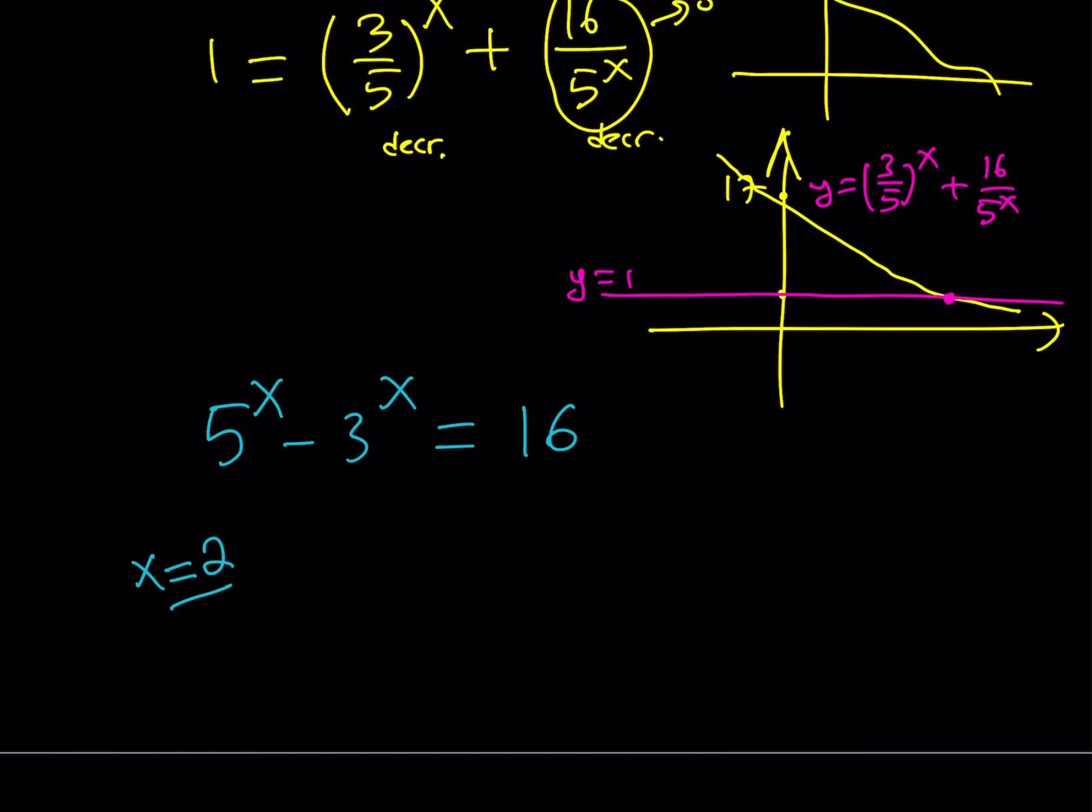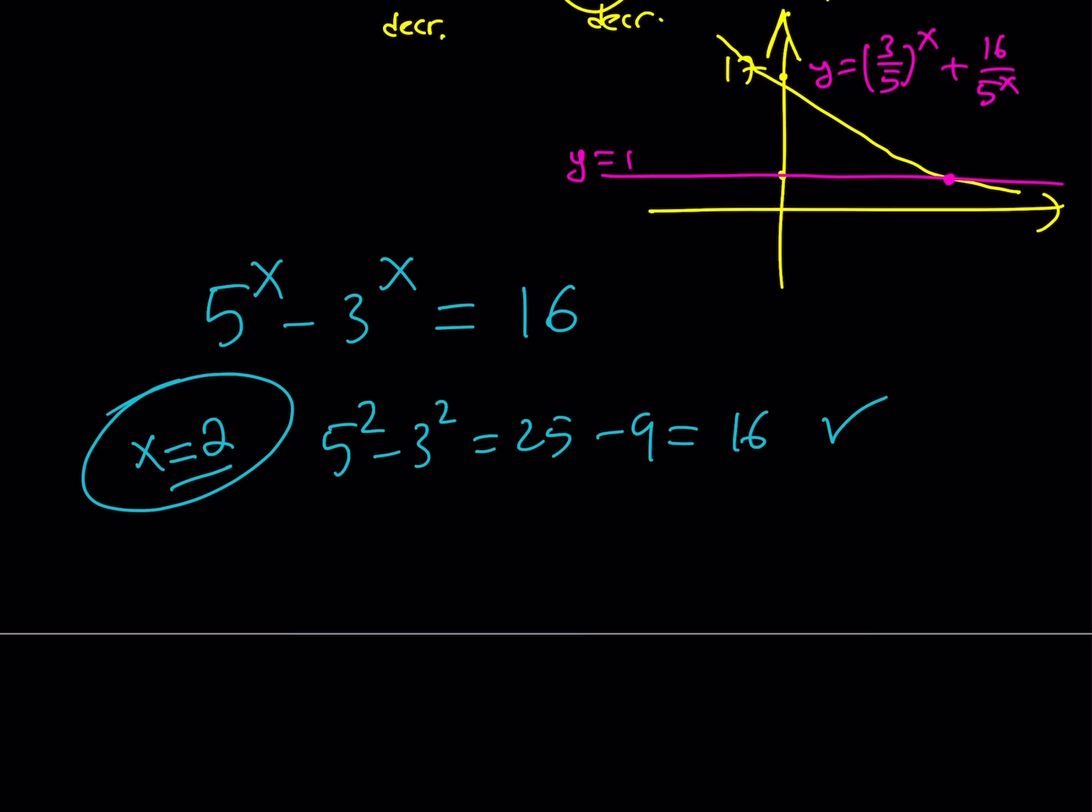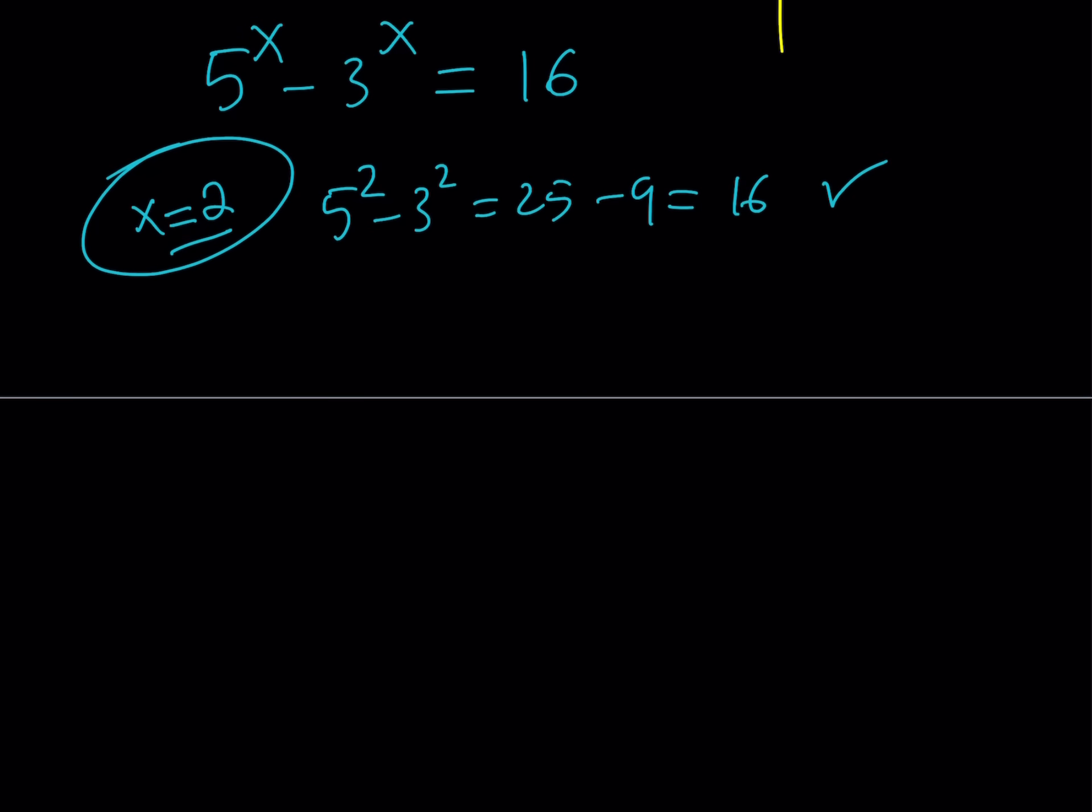How about x equals 2? Let's see. 5 squared minus 3 squared is 25 minus 9, and that is equal to 16. Bingo. We got it. So x equals 2 is a solution, and x equals 2 is the only solution to this equation.